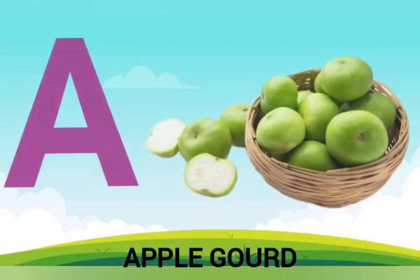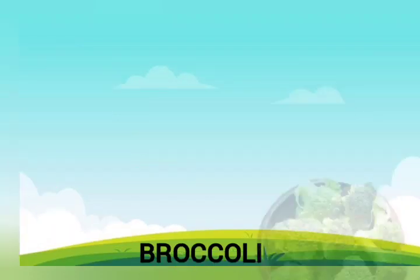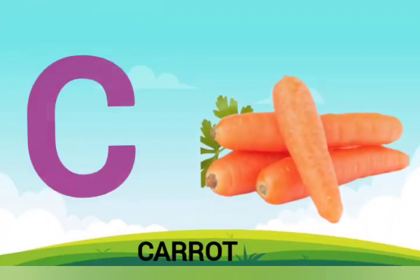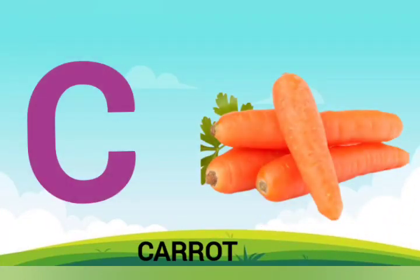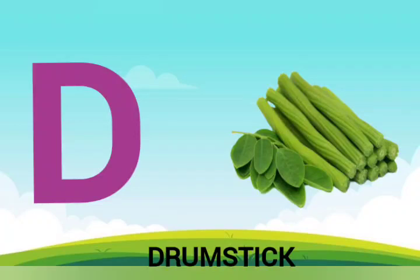A is for apple gourd, apple gourd. B is for broccoli, broccoli. C is for carrot, carrot. D is for drumstick, drumstick.